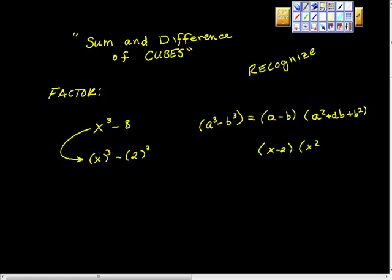We can say this is (x - 2) times (x² + 2x + 4), right? Because b squared is 4. So there's our difference of cubes.